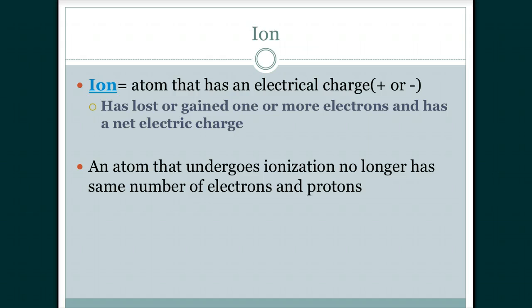Ions are atoms that either lost or gained electrons. When an atom loses one electron it becomes a positively charged ion with a charge of +1. If it loses three electrons it becomes a positively charged ion with a charge of +3. If it gains three electrons it becomes a negatively charged ion with a charge of -3.